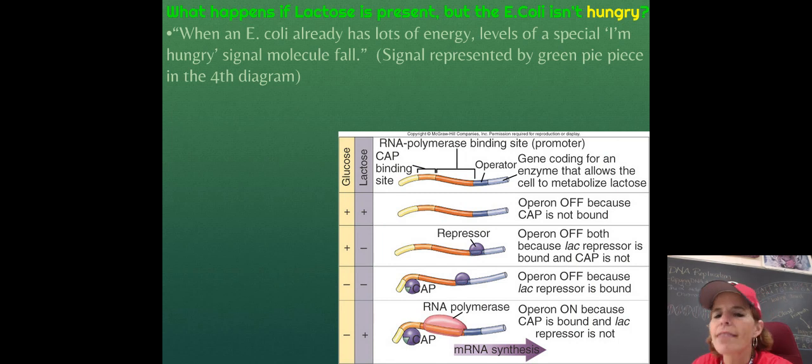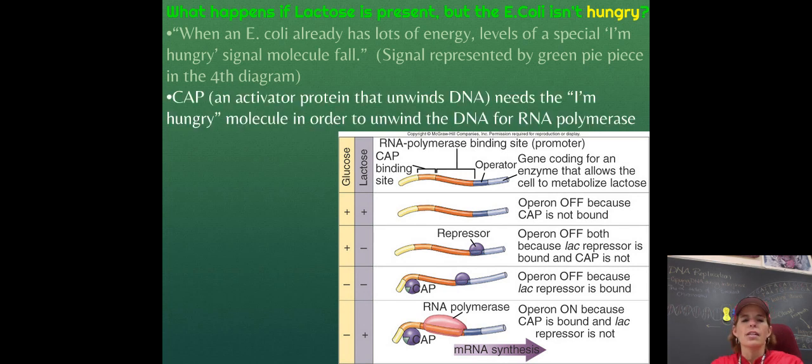When an E. coli already has lots of energy, levels of a special I'm hungry signal molecule fall. So I want you to take a look at the diagram and what you're looking for in the very bottom corner, very bottom row is a cap, what's called cap. Cap is an I'm hungry molecule that has a little green piece stuck in it. So cap is an activator protein that unwinds the DNA. And if it has the I'm hungry molecule in it, it will unwind the DNA. If the I'm hungry molecule isn't there, then it won't unwind the DNA and nothing can happen. So let's take a look at the four possibilities.